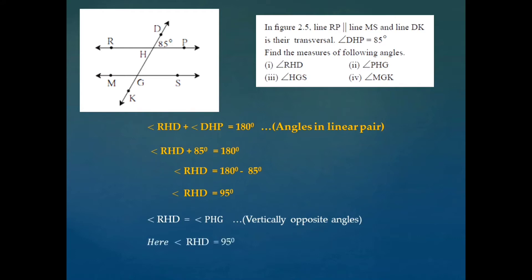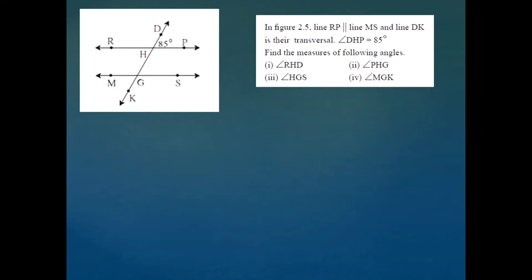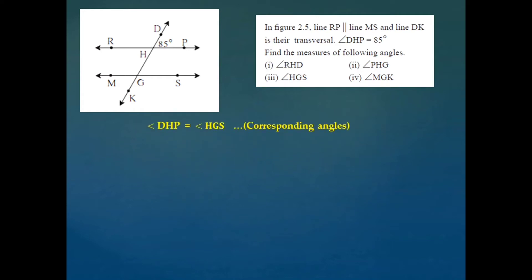Now, angle RHD is congruent with angle PHG because these two are vertically opposite angles. Angle RHD is 95 degrees as we just found, so the measure of angle PHG is also 95 degrees.